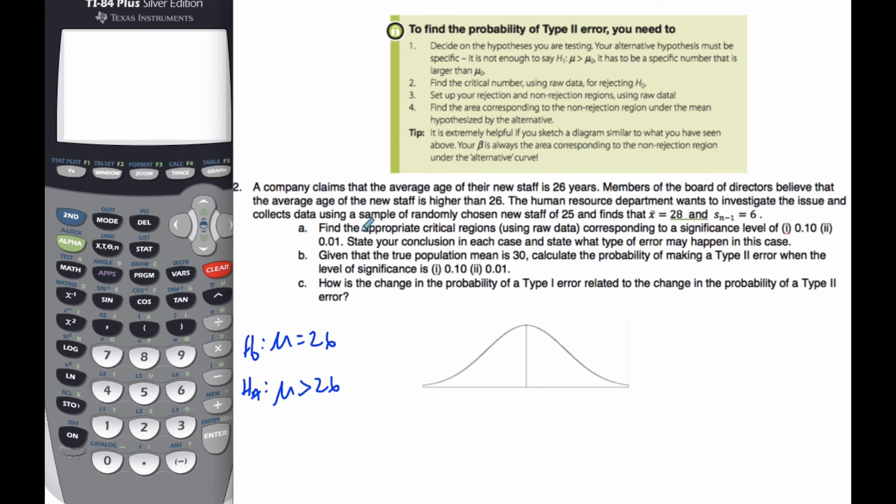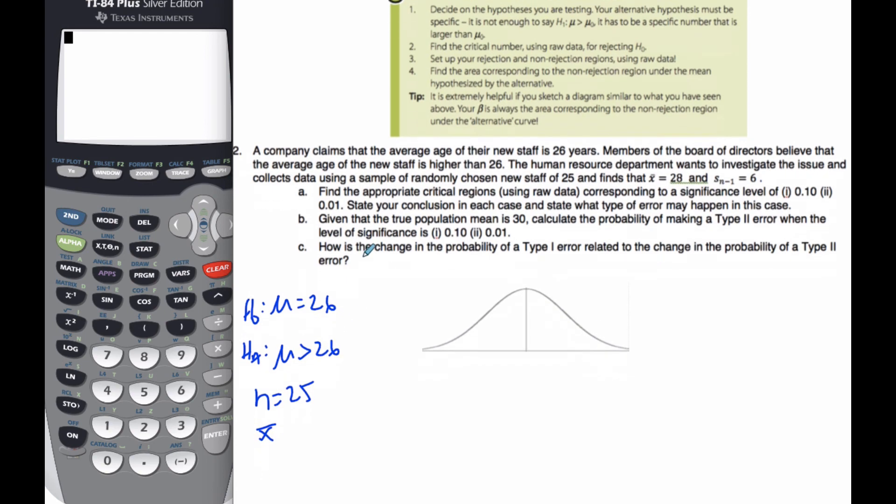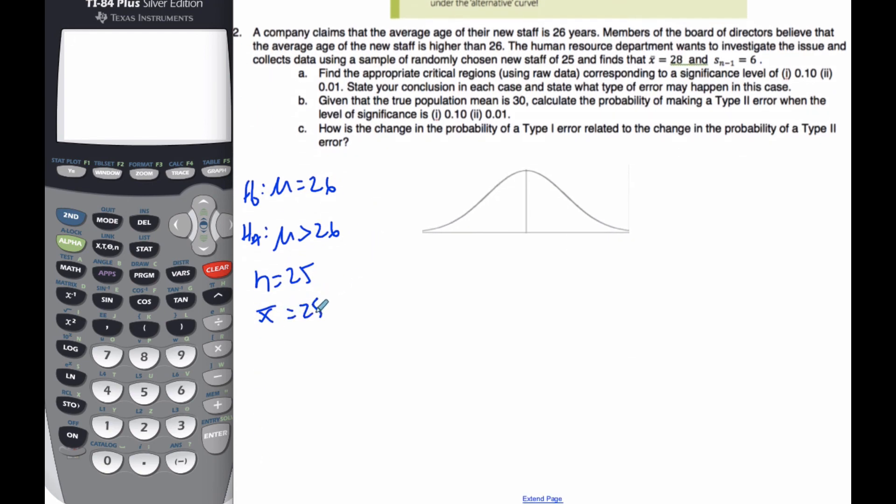The human resources department investigates the issue and collects data from a sample randomly chosen where n = 25, x̄ = 28, and s = 6. The standard deviation of the sample is an unbiased estimate of the population because I don't know the true standard deviation, so I'm going to use the t-test, a t-statistic for this problem.